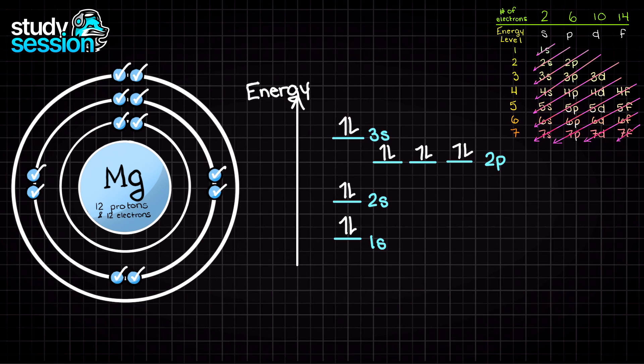We can now rewrite the standard notation solution like this, and we have thus solved for the standard electron configuration of ground state magnesium.